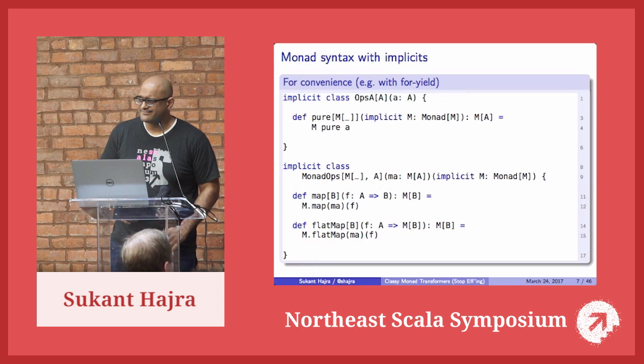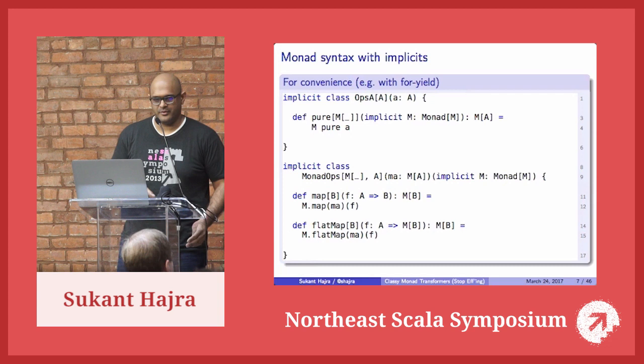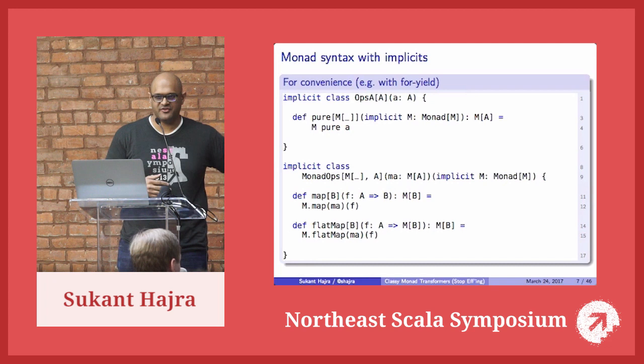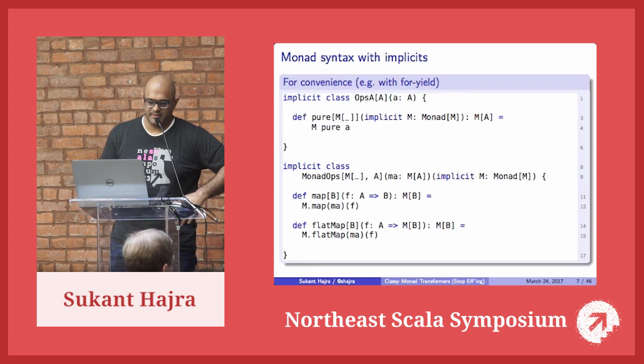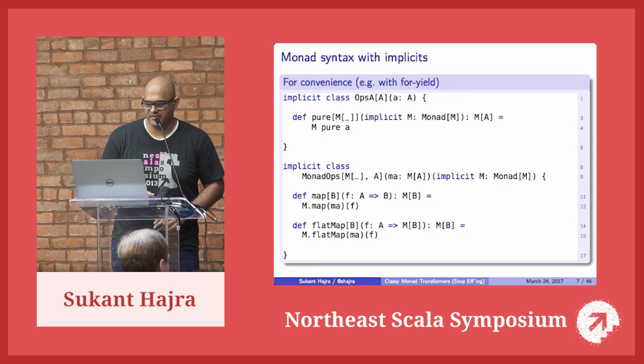This is a fiddly bit. I want to show monad instances and then magically have the maps and flatMaps work. This is type enrichment - we're going to use implicits to add methods on the data type. The methods we're interested in are pure, map, and flatMap, and we're going to drive that through the type class instance.